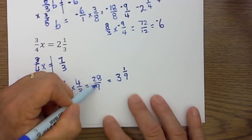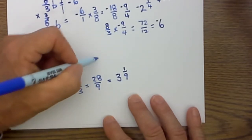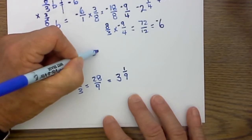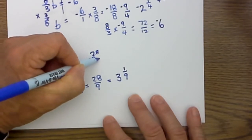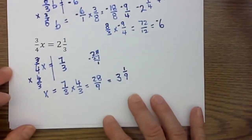Let me slow down here. What I did was I divided 9 into 28. 9 times 3 is 27, so I have 28 minus 27, that gives me a remainder of 1, and then I put 9 under the remainder. So I have 3 and 1/9.